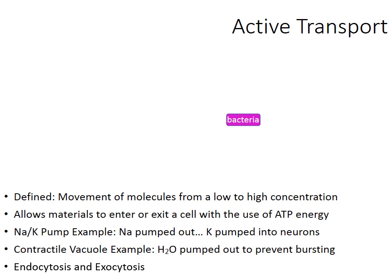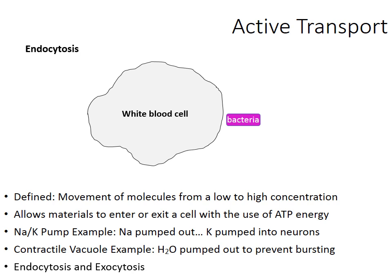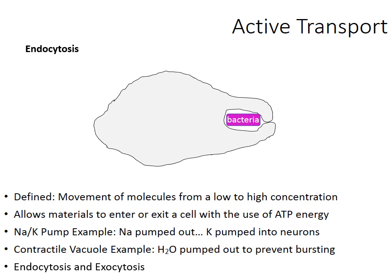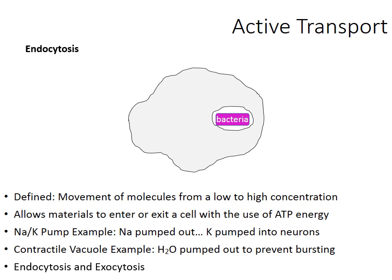Finally, endocytosis and exocytosis are two examples of active transport where cells take molecules in or out with the use of ATP. Here's a bacteria cell and here comes a white blood cell — a great example of endocytosis. The white blood cell slowly devours and wraps its cytoplasm around the bacteria until the bacteria has been taken into the cell. 'Endo' means within, 'cyto' means the cell. The white blood cell spends ATP energy to do this, and once the bacteria is trapped, enzymes are placed inside the protective pouch to eventually kill the bacteria — one way white blood cells protect us from infection.